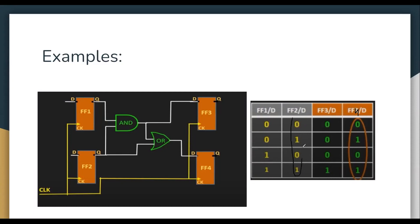Whatever is on flip-flop 2 is reflected on flip-flop 4, because of the OR gate behavior. So the path from flip-flop 1 through to flip-flop 4 is a false path — it is not used anywhere; the output is determined by flip-flop 2 only. This path is our false path for this circuit.